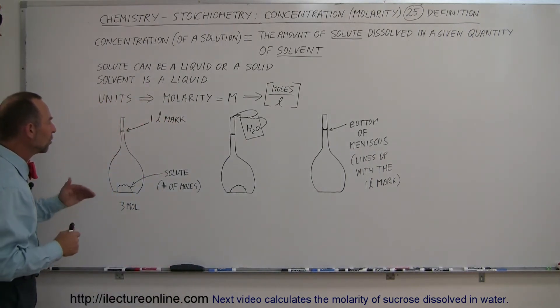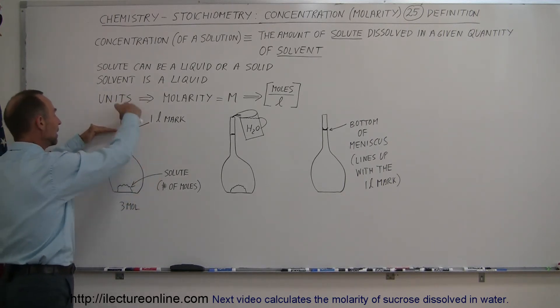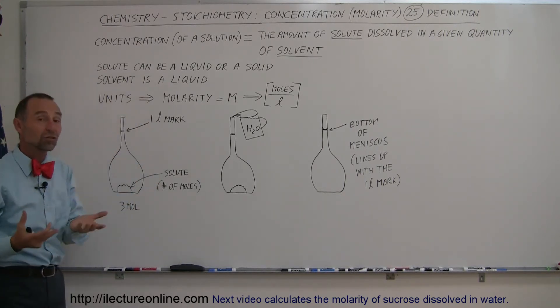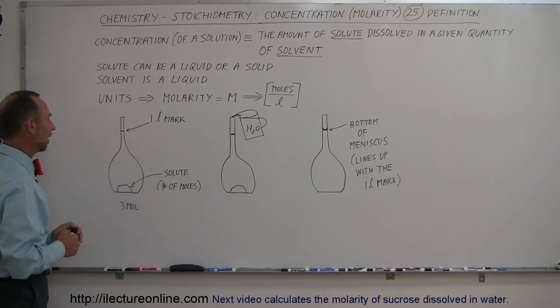And so what we do is we get a flask that has a one liter mark and we first put in the solute—could be a solid, could be liquid, doesn't matter. And we put a known quantity of solute, let's say three moles, inside this flask.